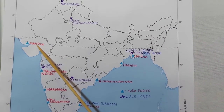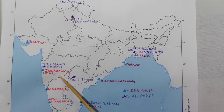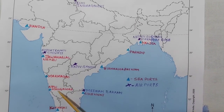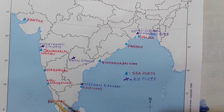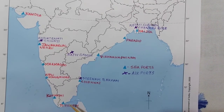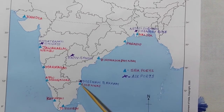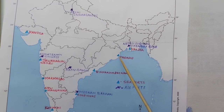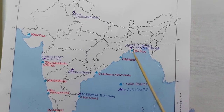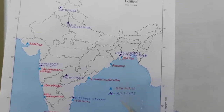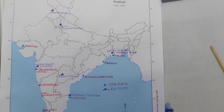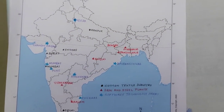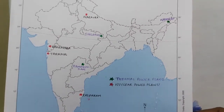For seaports: Kandla is very important, appearing again and again in exams. Then Jawaharlal Nehru seaport of Maharashtra, Marmagao of Goa, New Mangalore seaport of Karnataka, Kochi of Kerala, Tuticorin of Tamil Nadu, and Chennai also in Tamil Nadu. Next, Visakhapatnam and Paradip — again very important, appeared many times in exam papers in the last 25 years. And Haldia port of Kolkata. So if you go through all these three maps covering seaports, airports, cotton textile industries, iron and steel plants, software technology parks, thermal power plants, and nuclear power plants, you will be well prepared.